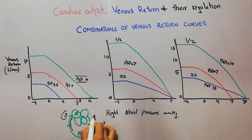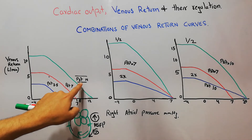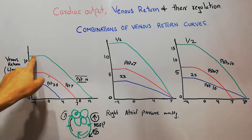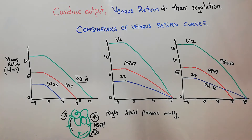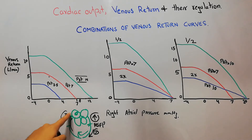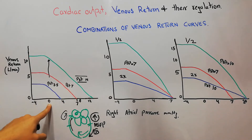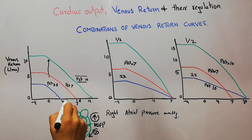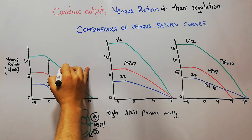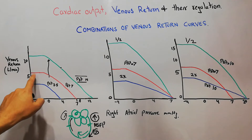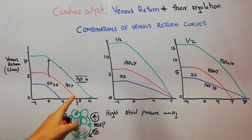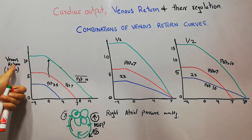If mean systemic filling pressure is increased — for example, in the green color graph it has been increased to 14 — more blood comes with more force toward the heart at each and every pressure level of the right atrium. So even at zero right atrial pressure, the venous return moves up. At any pressure level, the venous return will be higher compared to the normal venous return curve. If mean systemic filling pressure is increased, venous return definitely increases.